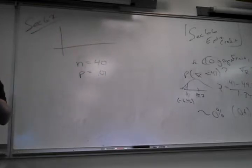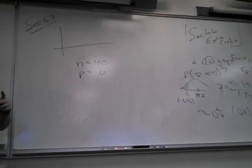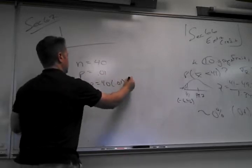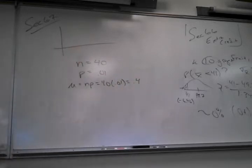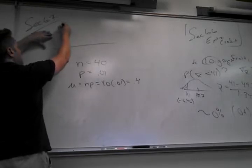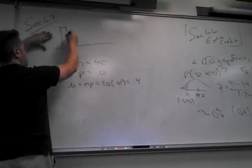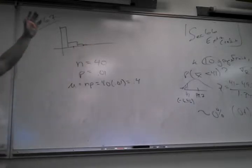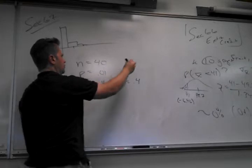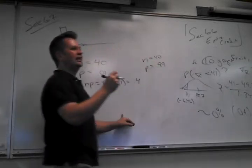If N is 40 and P is 0.99 — making 99% of free throws — NP would be 39.6. If I try to draw that, there's a wall on either side: you can't go below 0 or above 40. If the mean is too close to a wall, everything stacks up against it. That doesn't look normal. In order to look normal, it needs room to go up and then come back down.